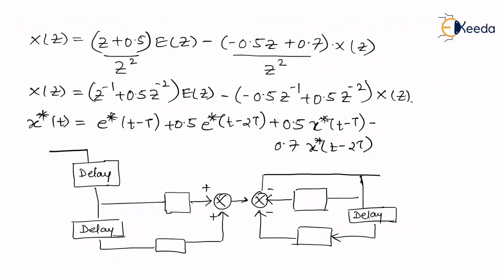Now if I want to implement this expression, the signal starts with the error function E*(t). If I apply a delay function I get E*(t minus T) with a gain of 1. Further with 0.5 and a second delay, the expression becomes E*(t minus 2T) with a gain of 0.5. Both are added together here.